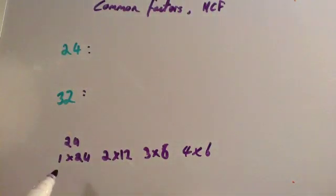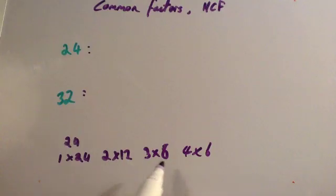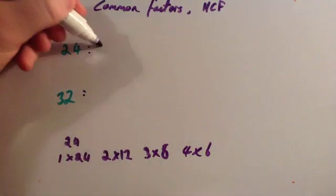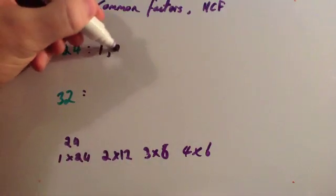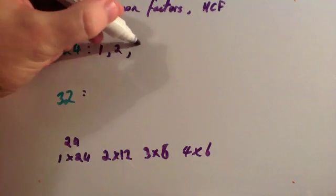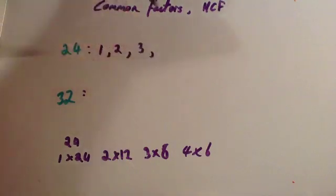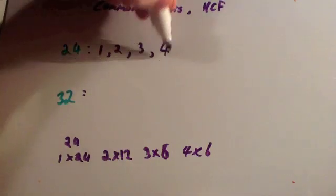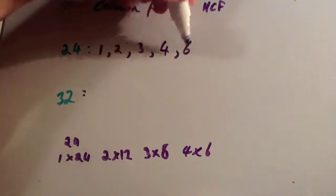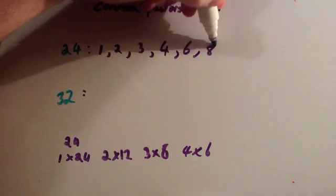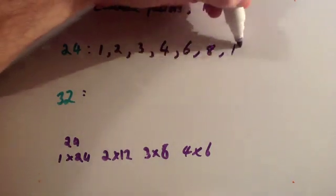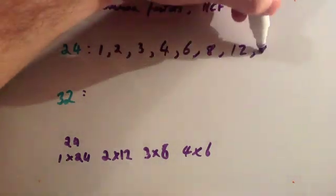So the factors of 24 are 1, 24, 2, 12, 3, 8, 4 and 6. So in order: 1, 2, 3, 4, 6, 8, 12 and 24.